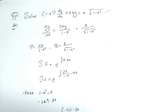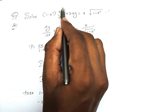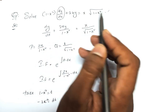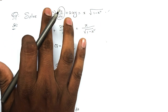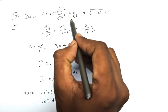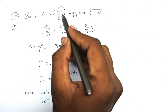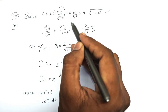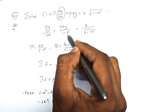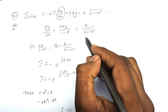This equation is simple. Dividing both sides by (1 - x²), we get: dy/dx + 2xy/(1 - x²) = x√(1 - x²)/(1 - x²), which simplifies to the standard linear form dy/dx + P·y = Q.